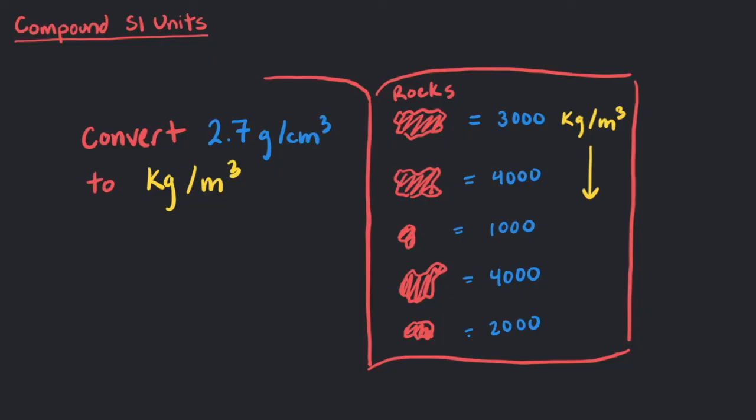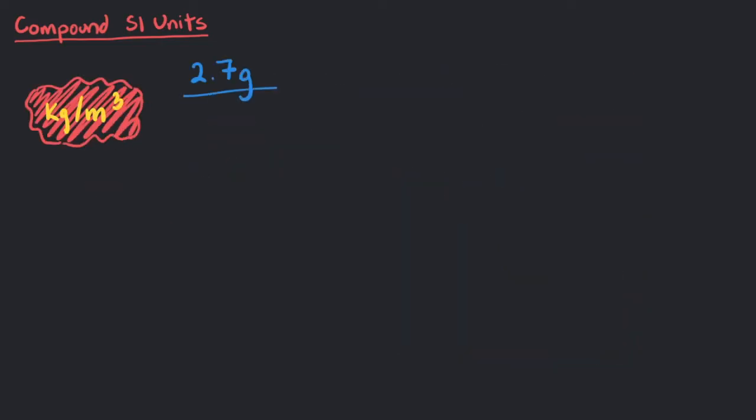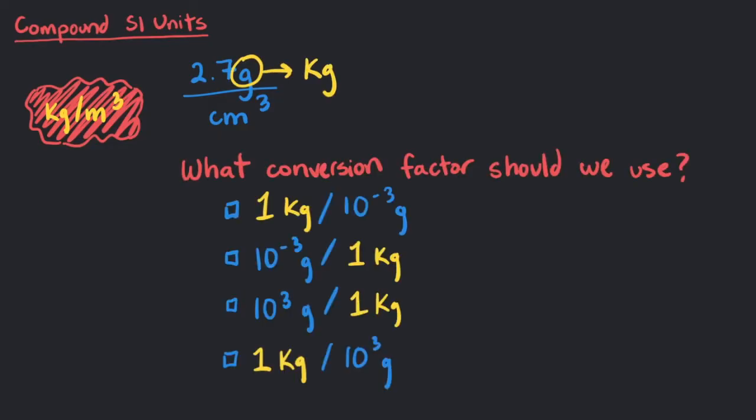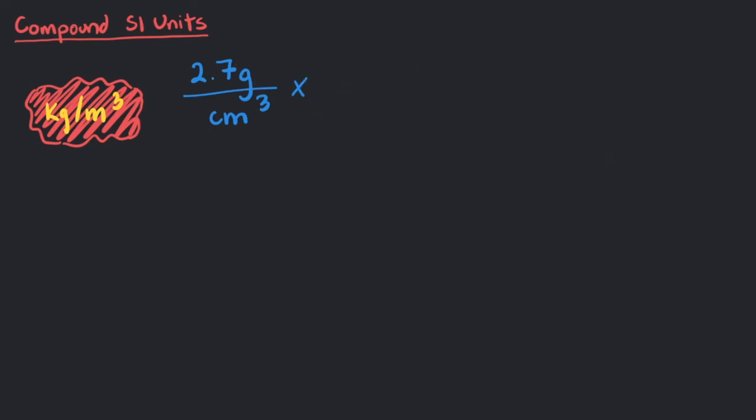Just like the last problem, we can first write 2.7 grams per cubic centimeter. For now, we will focus on converting the grams to kilograms. What conversion factor should we use? 1 kilogram is 10 to the 3 grams. To cancel out the grams, we need to have 10 to the 3 grams on the bottom, so we will multiply 2.7 grams per cubic centimeter by 1 kilogram over 10 to the 3 grams. This leaves kilograms on the top.